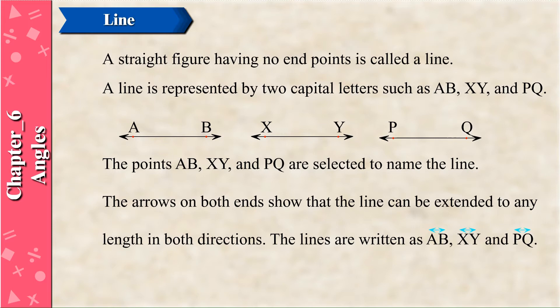The arrows on both ends show that the line can be extended to any length in both directions. Lines are written as line AB, line XY, and line PQ.